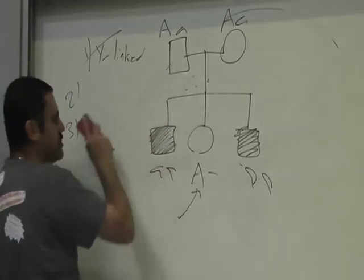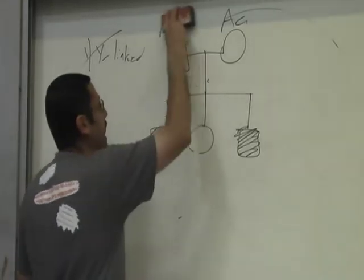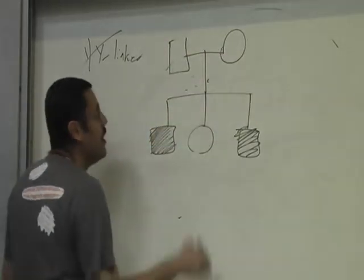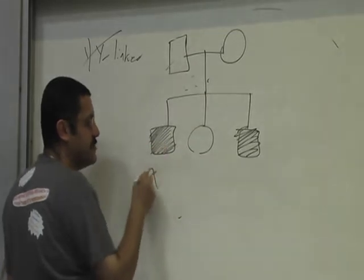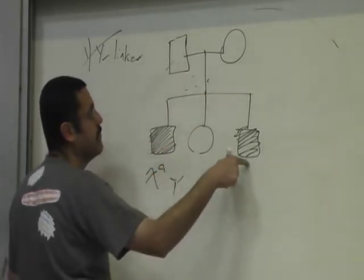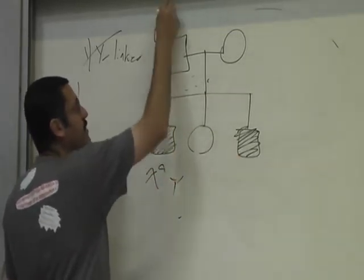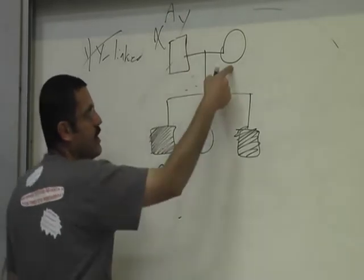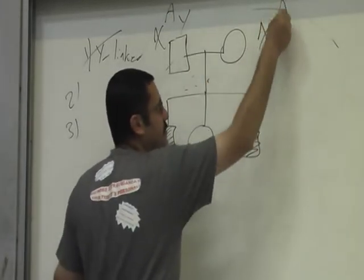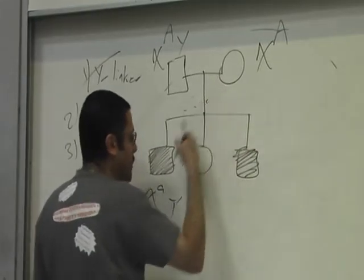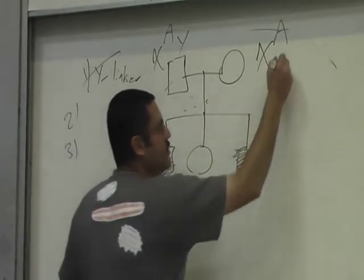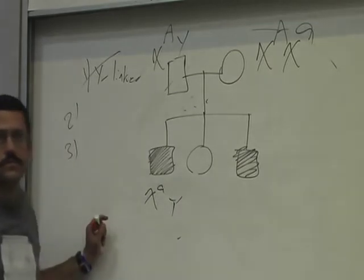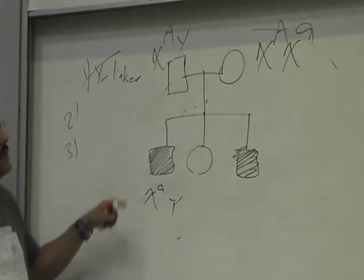Can it be X-linked recessive? For X-linked recessive, he has to be little A-Y, same with his brother. We know for a fact he has to be big A because he's normal. She, we know for a fact, has to have a big A because she's normal, but she has given the little As to her sons. She has to be two little As.